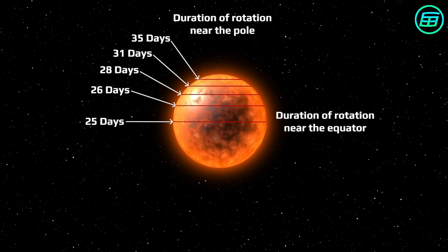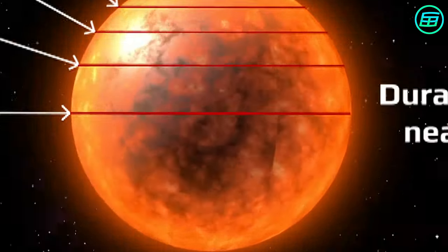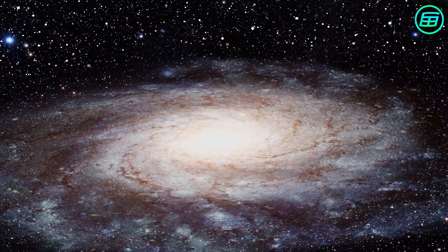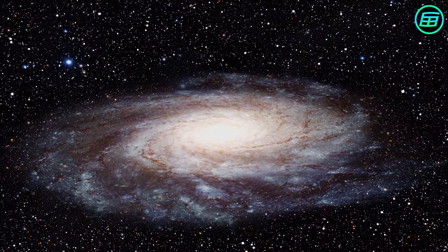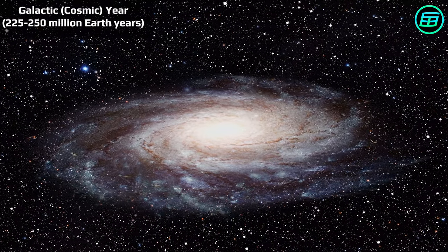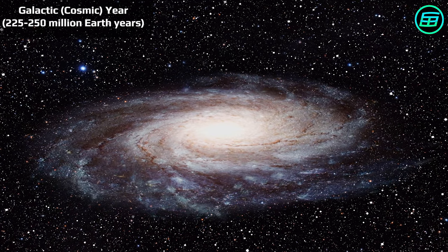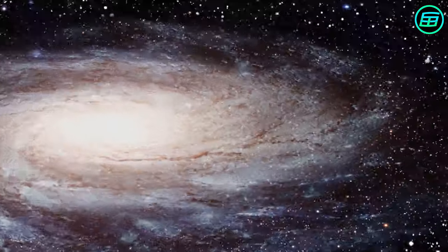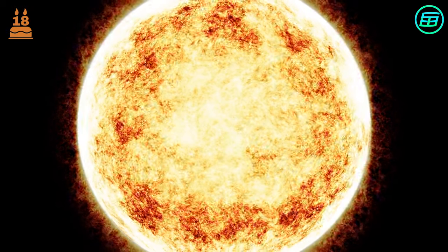As well as rotating on its axis, the Sun also revolves around the centre of our galaxy every 225 to 250 million years, a period known as a galactic or cosmic year. Since it formed, the Sun has made 18 trips around the centre of the galaxy, so it's 18 galactic years old.